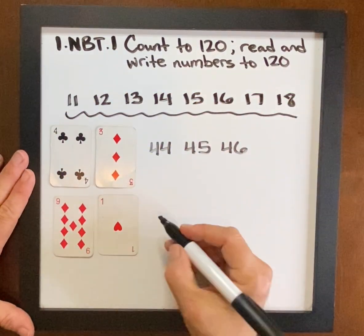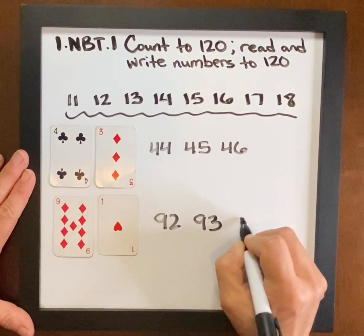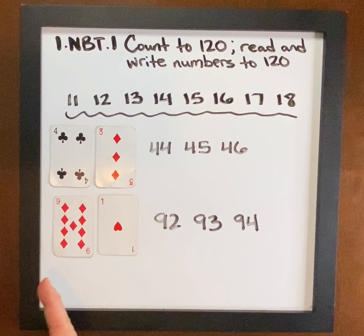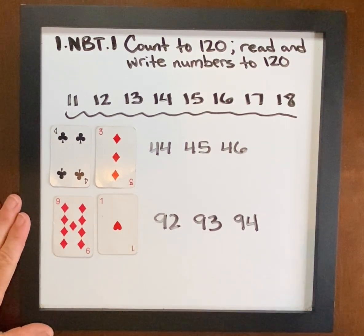Again together, 9, 10, 1, 9, 10, 2, 9, 10, 3, 9, 10, 4. Now let's count it with its name. 91, 92, 93, 94.